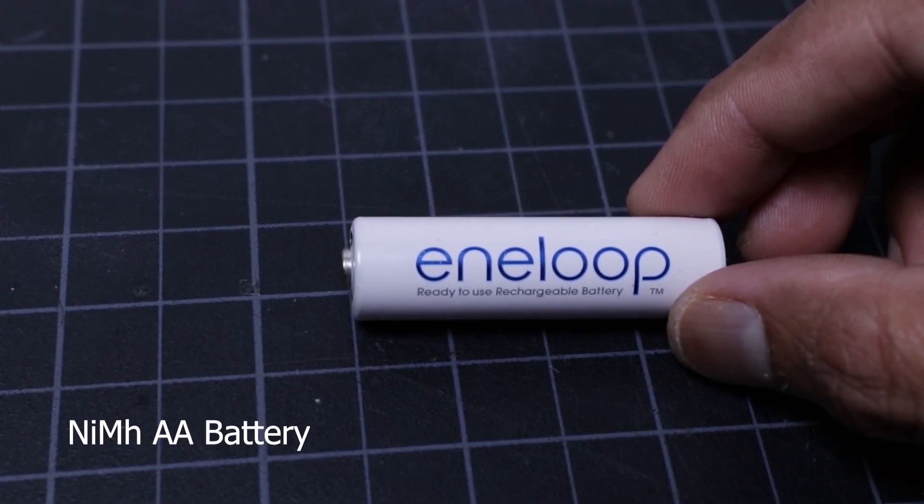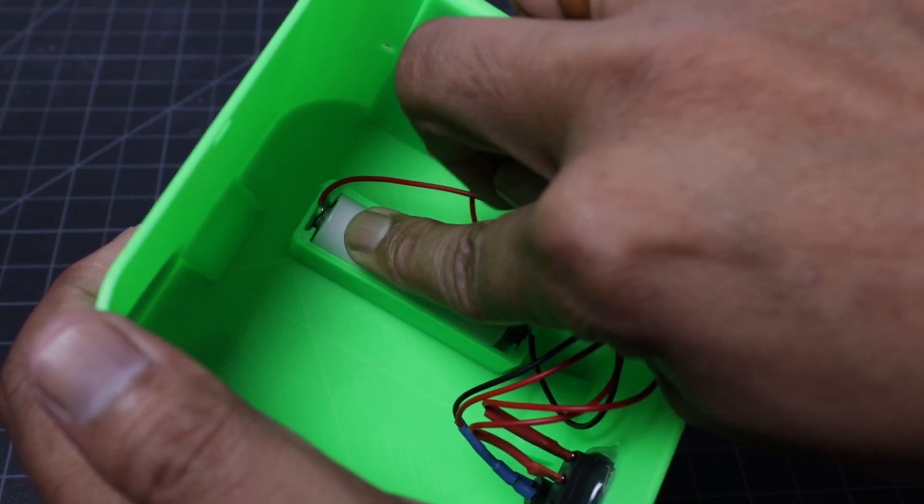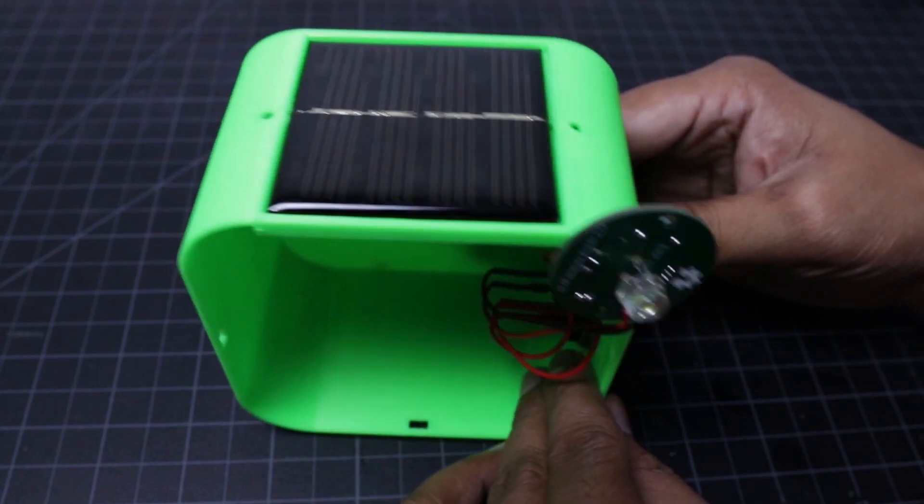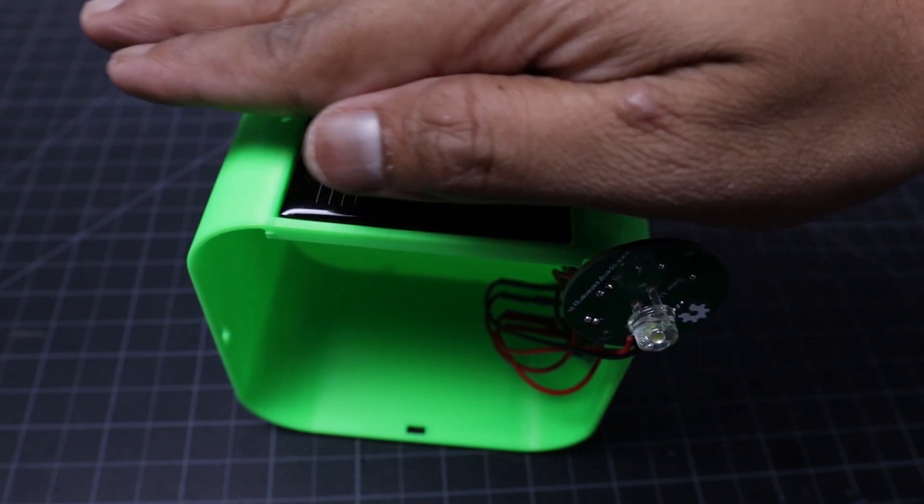For this project you will need an AA nickel metal hydride rechargeable battery. Here I am using an Eneloop battery. To test the lamp, turn on the rocker switch then cover the solar panel with your palm. You can see the LED will glow.